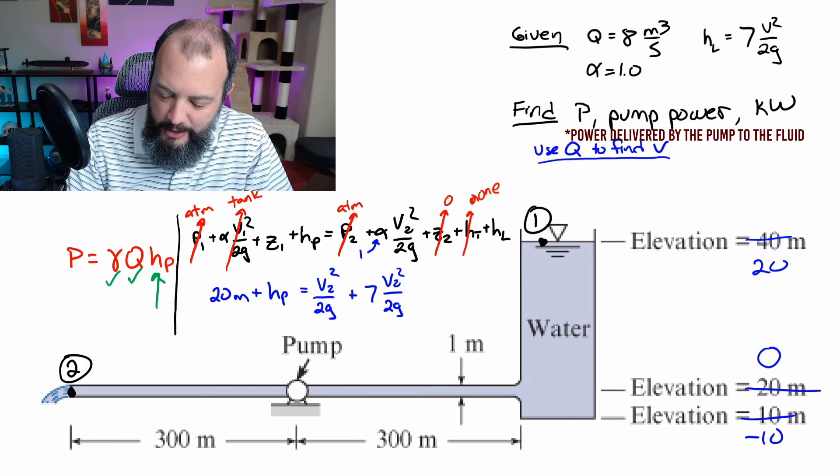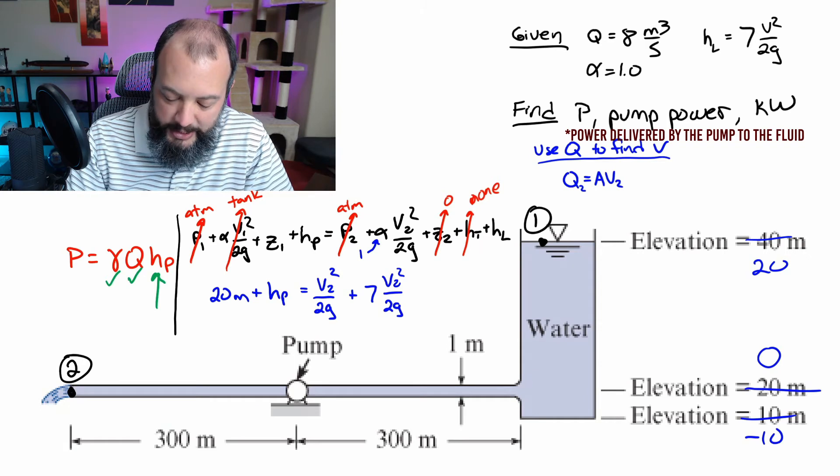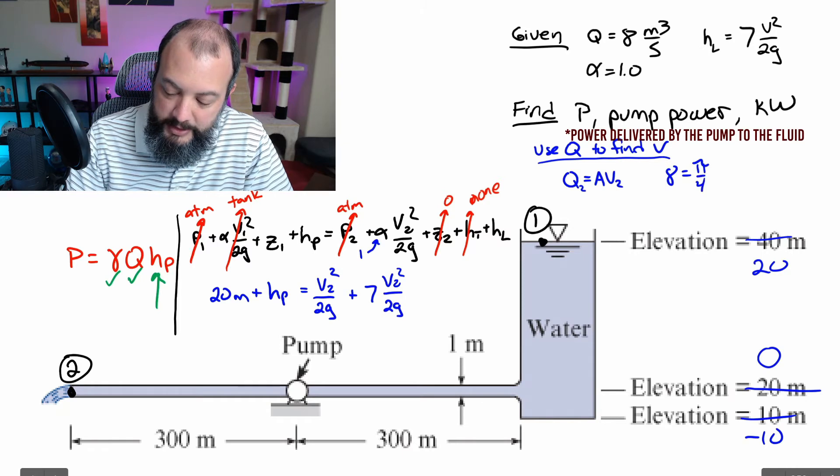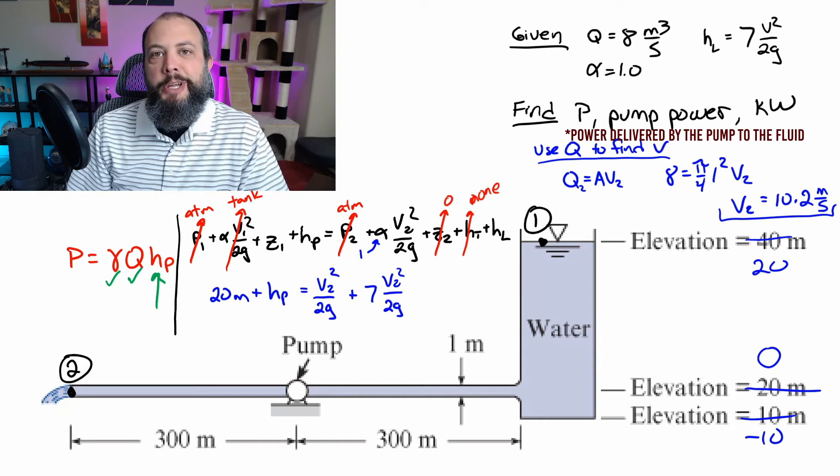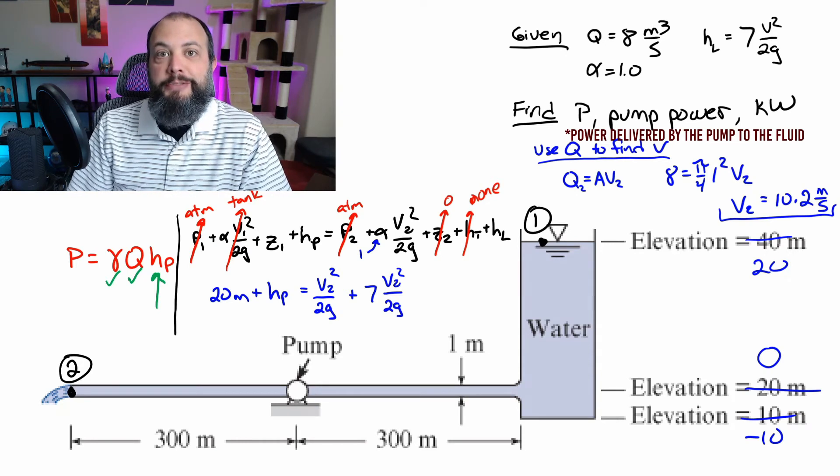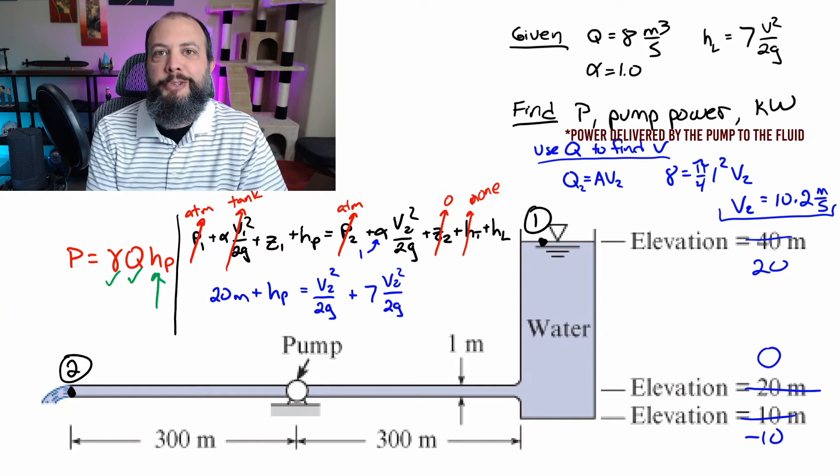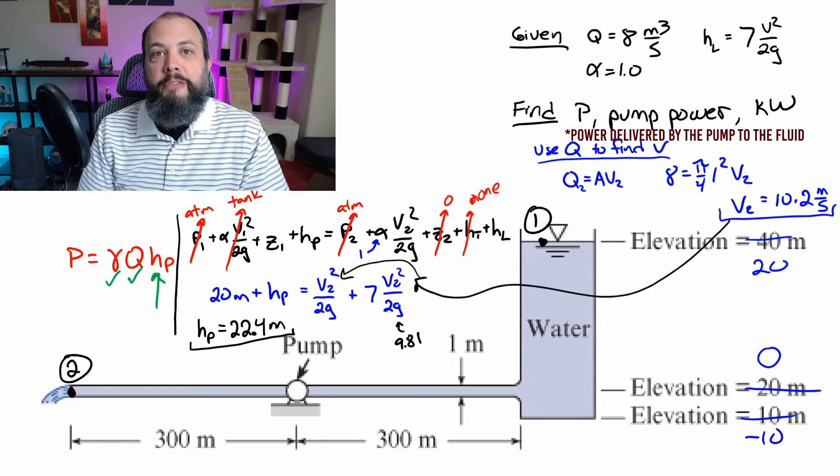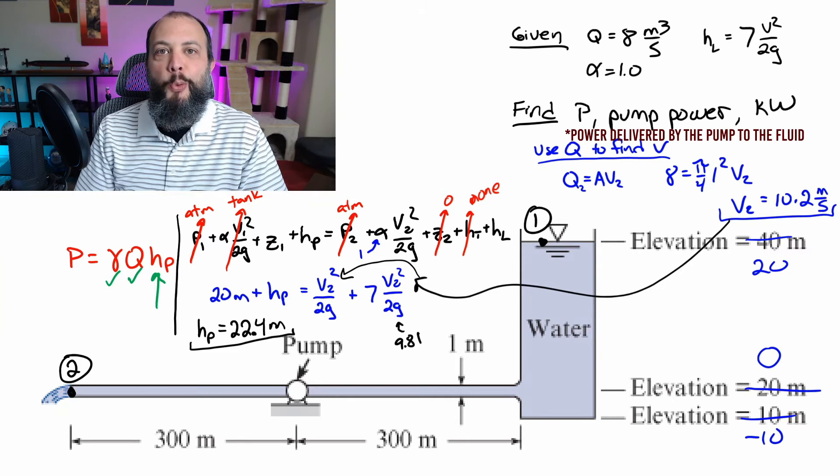Working over on the right side of my page now, flow rate is just equal to area times velocity. And we were given that the flow rate is eight meters cubed, and we have a diameter for the pipe of one meter. So pi over four times the diameter squared. And plugging in the numbers, we get a velocity of 10.2 meters per second. Now I'm going to be able to just work my way back to the left side of this page, plugging in this value in the energy equation to find pump head, and then plugging pump head back into the pump power equation to get pump power. So remembering to use 9.81 for gravity in the metric system instead of 32.2, and plugging in the 10.2 meters per second for velocity, I can plug into my calculator and get pump head of 22.4 meters.